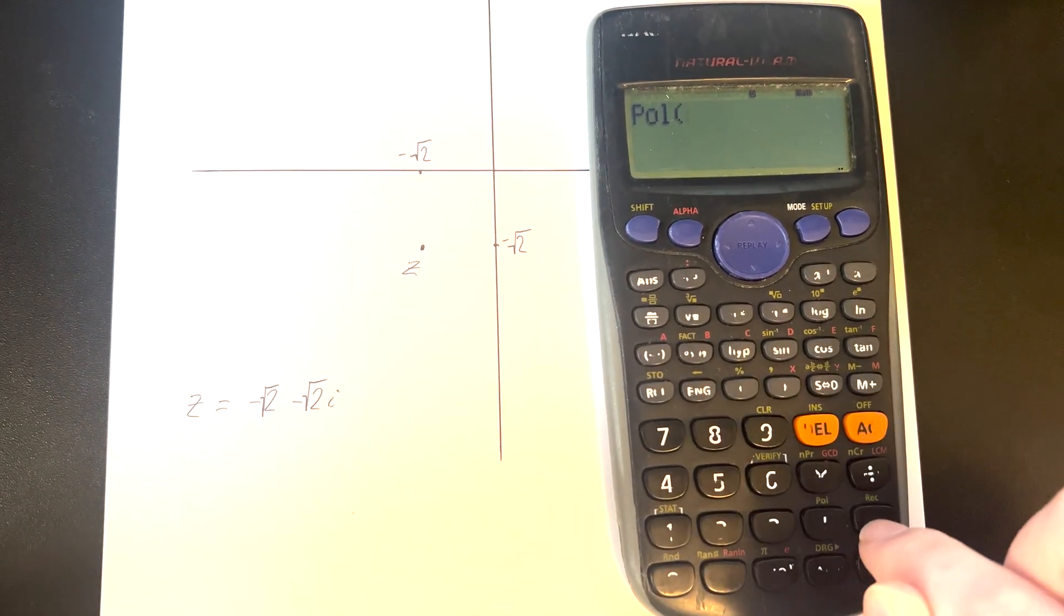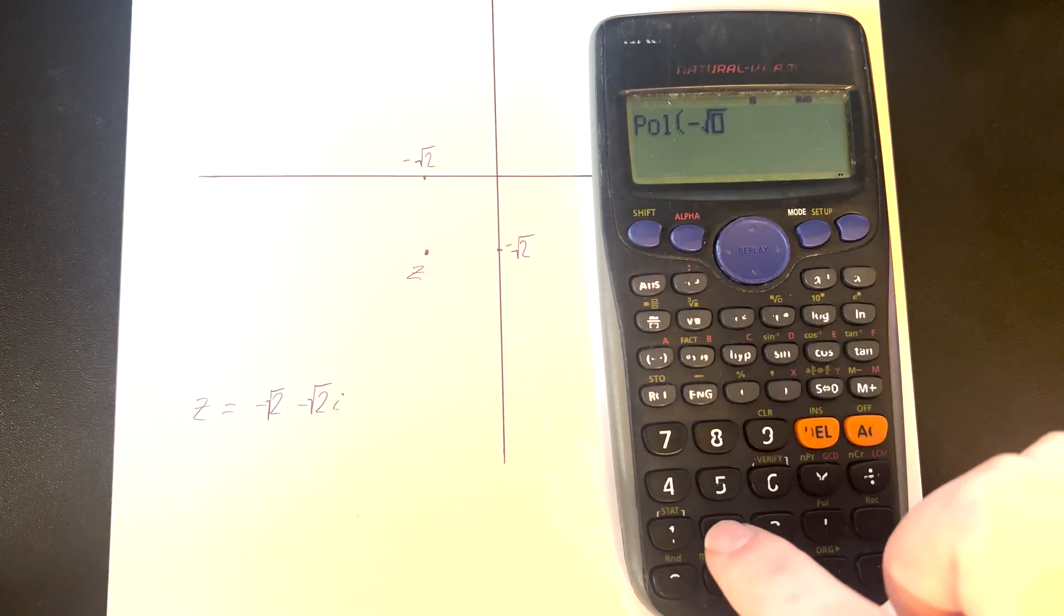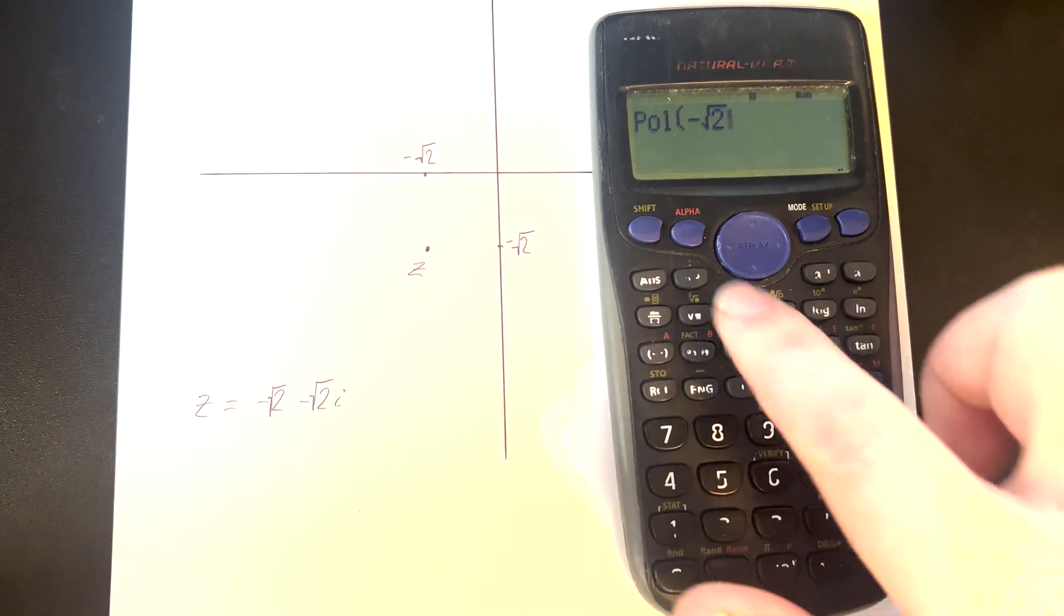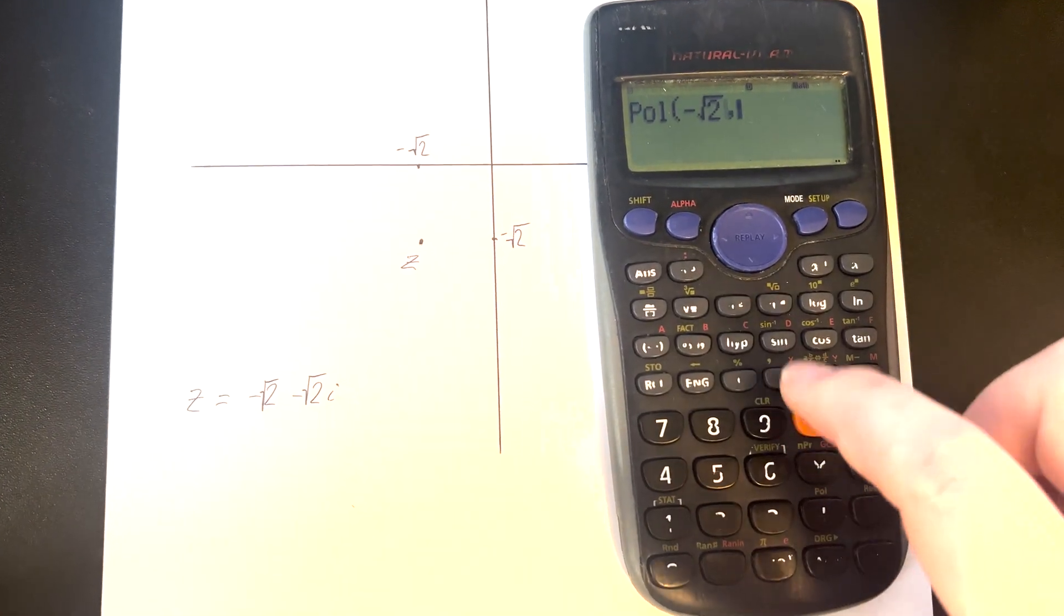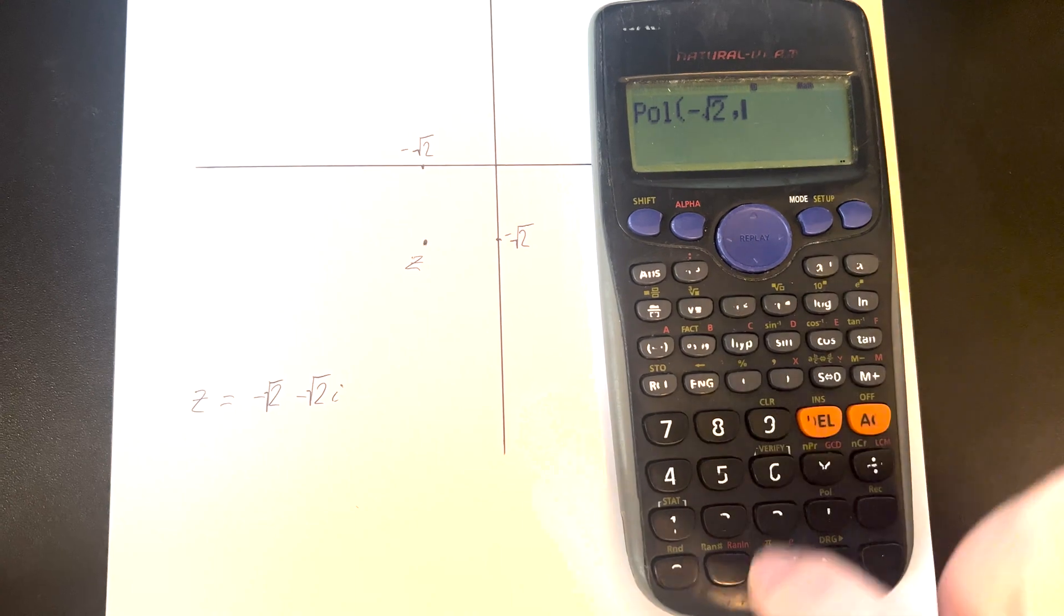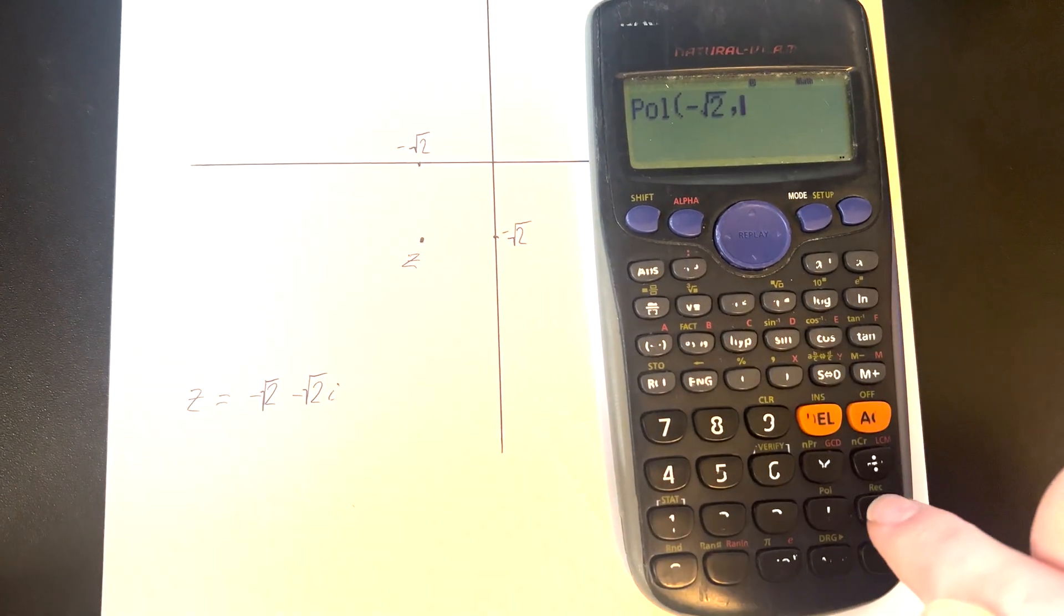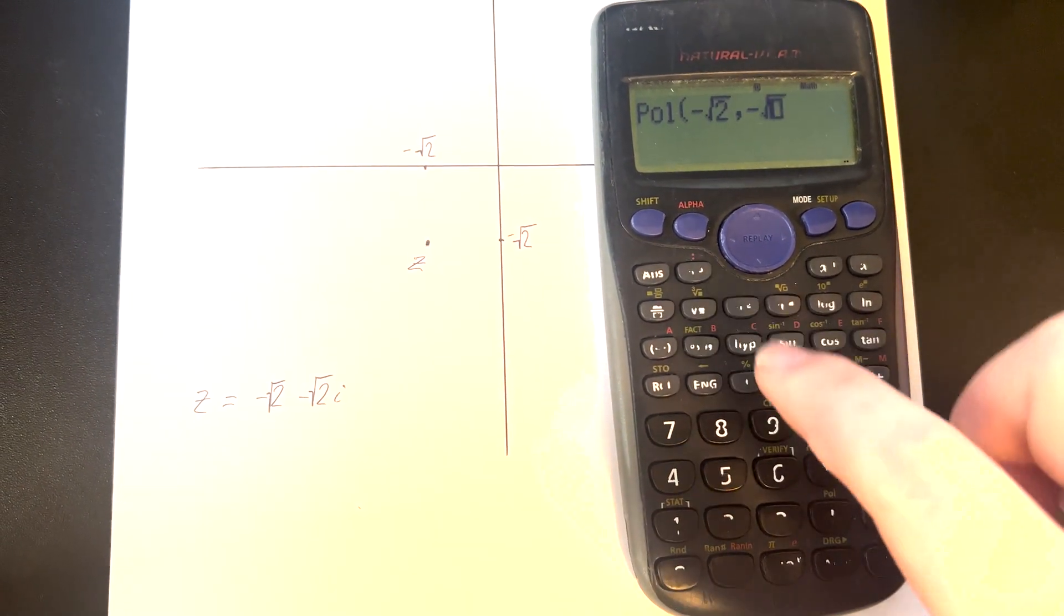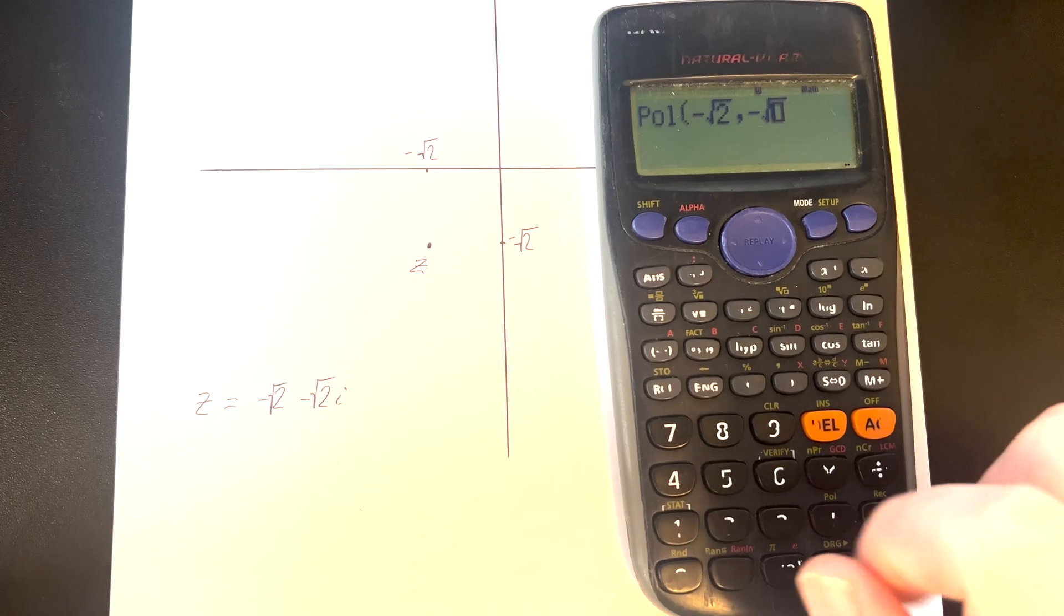To do this, all we need to do is make sure that we input our x coordinate first, then we'll separate that from the y coordinate with that comma. So shift, parentheses, and then we'll input our y coordinate, which is minus square root 2.